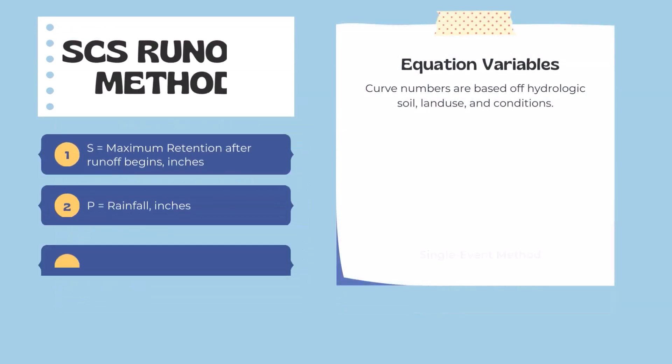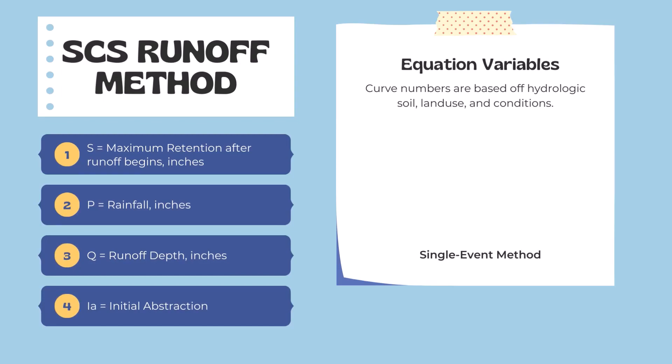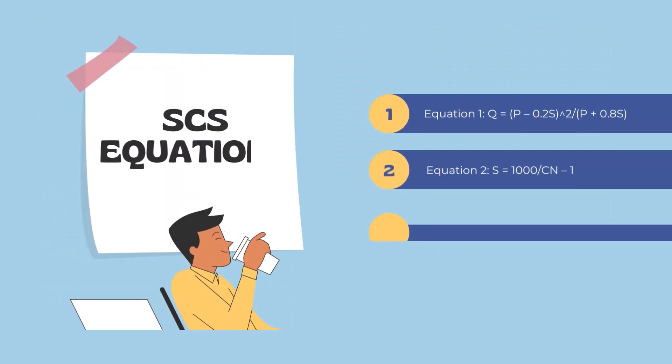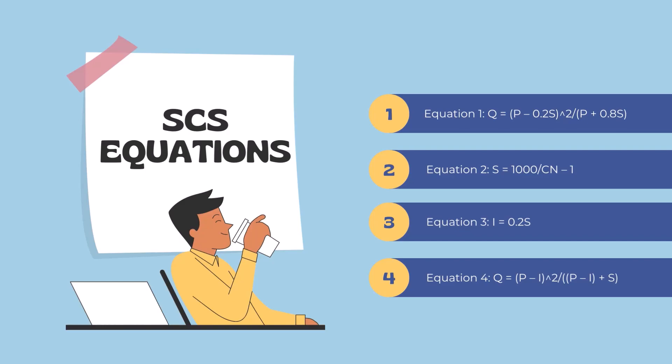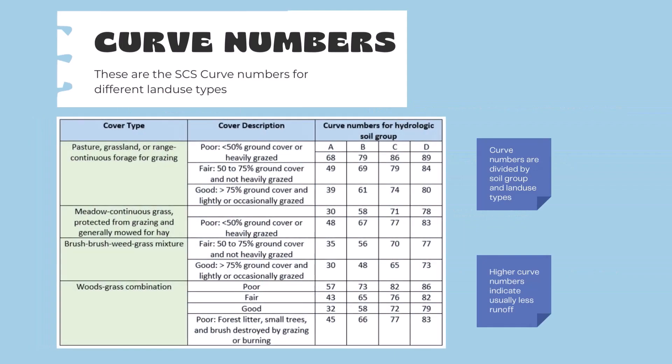Before we go into the SCS runoff method equations, we need to define the variables. S equals the maximum retention after runoff begins, in inches. P equals the rainfall in inches, and Q equals the runoff depth in inches. I sub A equals the initial abstraction of the soil. Curve numbers are also involved, based off hydrologic soil, land use, and conditions. The equations are: Q equals P minus 0.2S, squared, divided by P plus 0.8S — accounting for precipitation, runoff, and maximum retention. Equation two: S equals 1,000 divided by the curve number minus 1. Equation three: initial abstraction equals 0.2 times S. Equation four: Q equals P minus I, squared, divided by P minus I plus S. These four equations help determine runoff in inches, initial abstraction, precipitation, or soil retention.